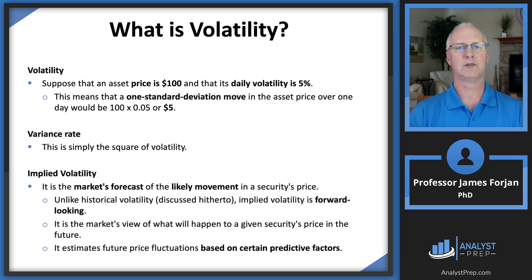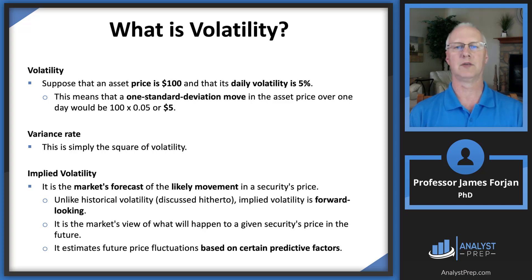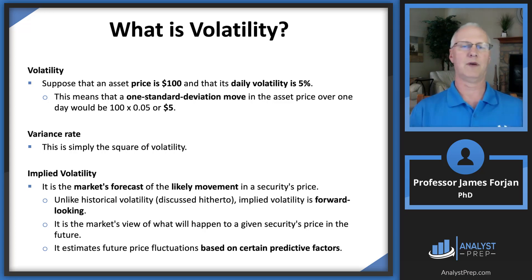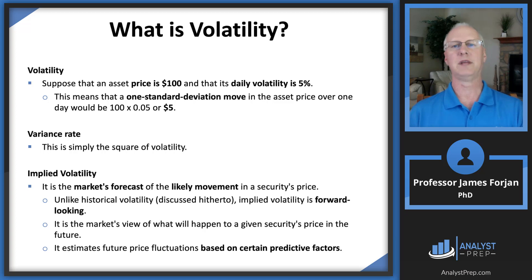Let's take a look at a simple example of volatility — kind of like a value at risk using a normal distribution. Suppose we have an asset priced at $100 and daily volatility is 5%. If you multiply 5% by 100, you get $5. So think of it as: you can go up by $5 to $105 or down by $5 to $95. That's the one standard deviation move in the asset price over one day.